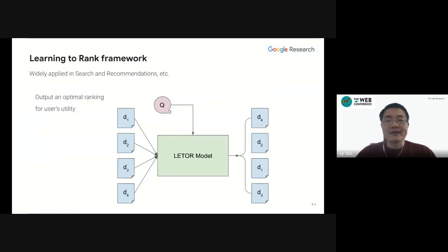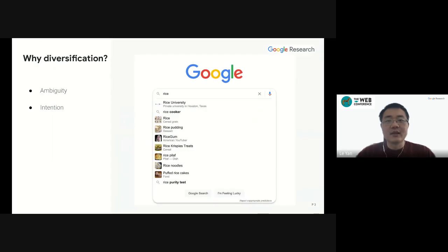Learning to rank framework has been widely applied in search and recommendation systems. We essentially train a machine learning model so that given a query and associated list of candidate documents, the learning to rank model generates a ranking that optimizes the user's utility. Usually in the literature, the user's utility is considered to be only determined by the relevance of the document to the query, but in practice, the diversity in the top results also matters.